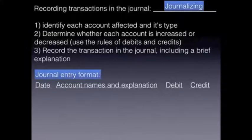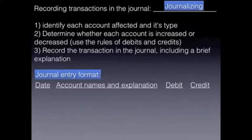Then you can determine whether each account is increased or decreased by using the rules of debits and credits that we talked about in the previous video. The last step is to record the transaction in the journal including a brief explanation. After step two you determine whether it's going to be a debit or credit in the journal, and then you would record it.